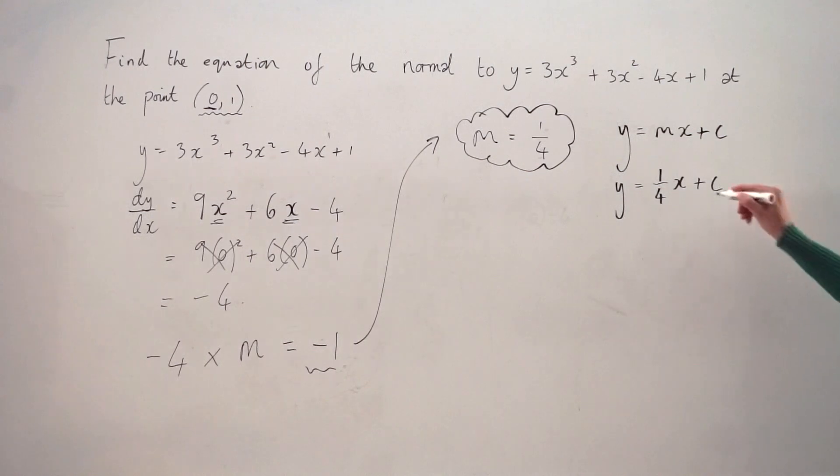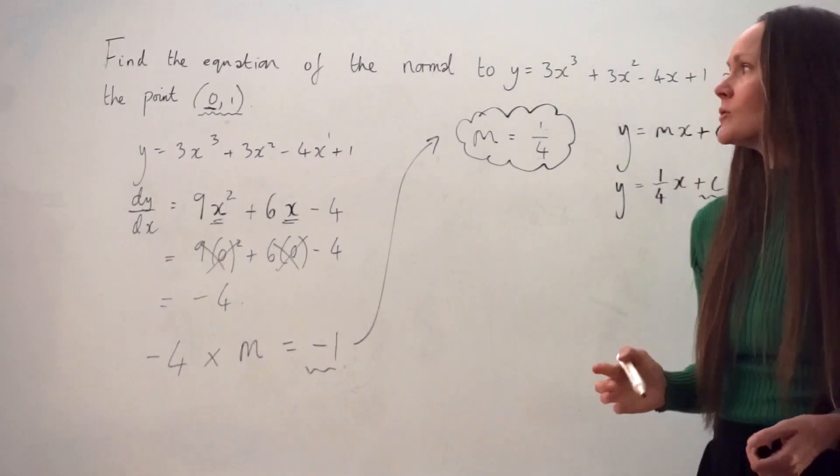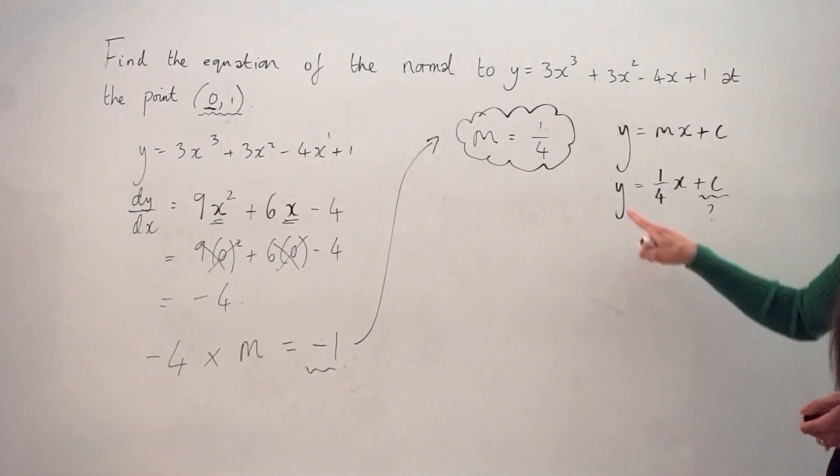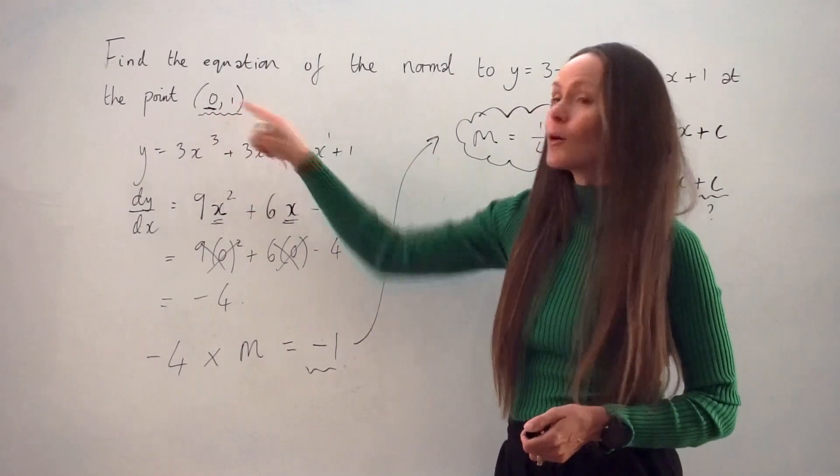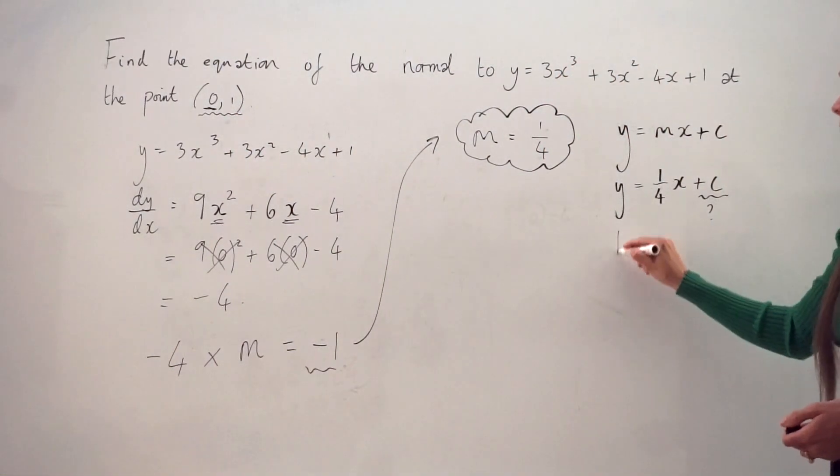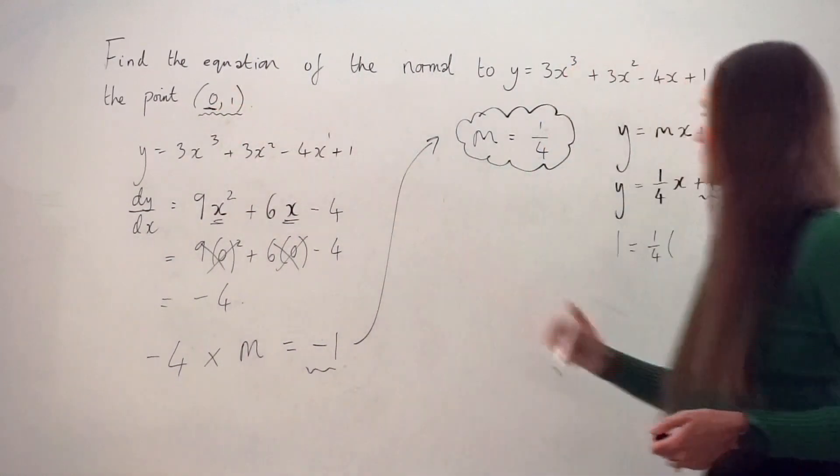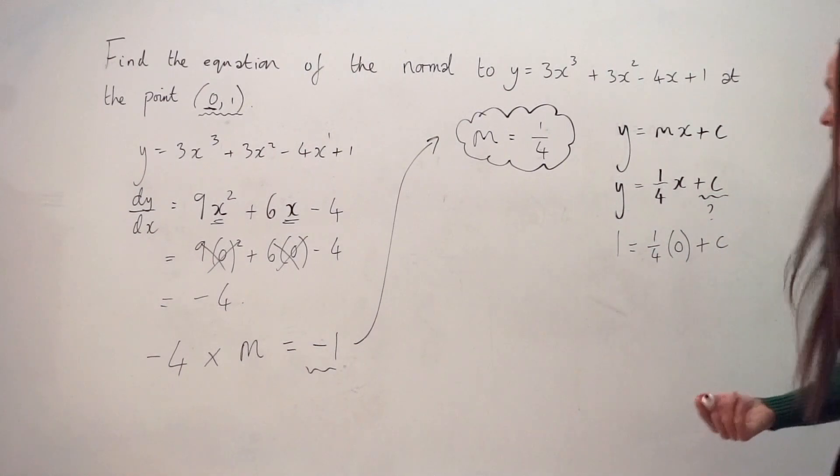So next what we have to do is work out the value of c, the y-intercept. And the only way you can do that is by substituting in the coordinates given in the question. So you're going to replace your x, y values with 0, 1. So I'm going to swap y for positive 1 and x for 0.